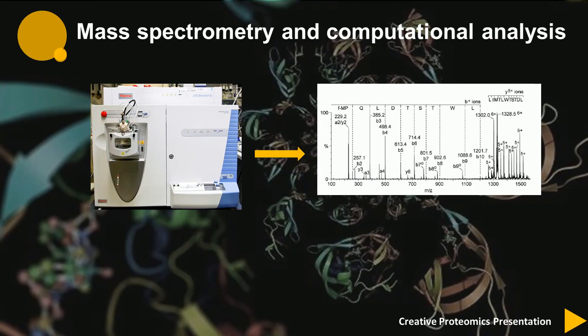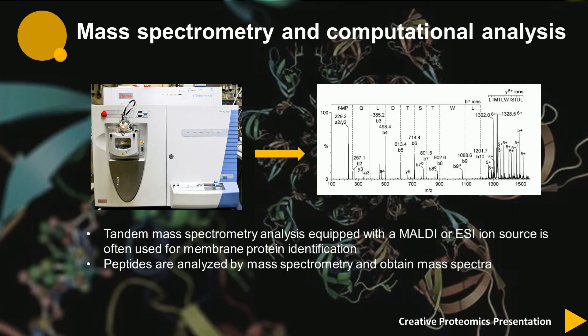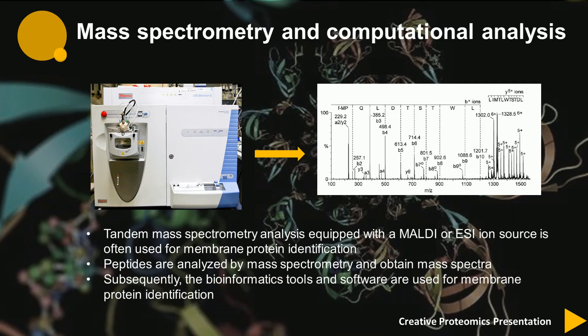Tandem mass spectrometry analysis equipped with a MALDI or ESI ion source is often used for membrane protein identification. Peptides are analyzed by mass spectrometry to obtain mass spectra. Subsequently, bioinformatics tools and software are used for identification.